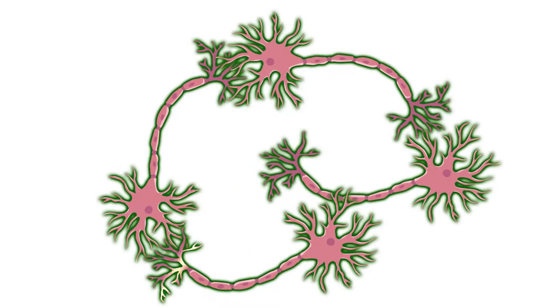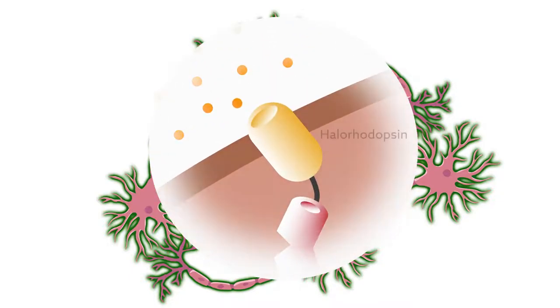To confirm that the neurons they labeled did in fact cause the lever-pressing, the researchers used CalLite to turn the neurons off. They did this by producing a control switch in the labeled neurons too. This protein, called halorhodopsin, is activated by yellow light and stops neurons from firing.